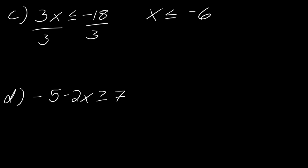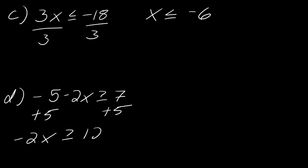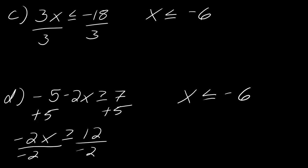Now for slightly more complicated examples. With example d, the goal is still to get x by itself using the same techniques as with linear equations. The first thing I'm going to do is add 5 to both sides, so I have -2x ≥ 12. Then I divide both sides by -2, and since I'm dividing by a negative I need to flip the direction of the inequality.